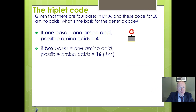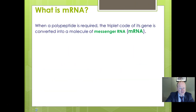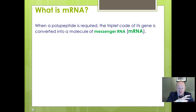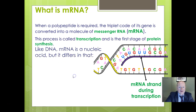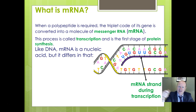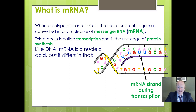So we've talked about the code being universal and the triplet code. Now let's think about transcription and translation. We've got information stored in the DNA in the nucleus of the cell, and we've got to get that information out to where protein synthesis occurs — on ribosomes in the cytoplasm. During transcription, a section of DNA unwinds — the section coding for that particular protein — the hydrogen bonds break, and enzymes move along to encourage a messenger RNA strand to form.